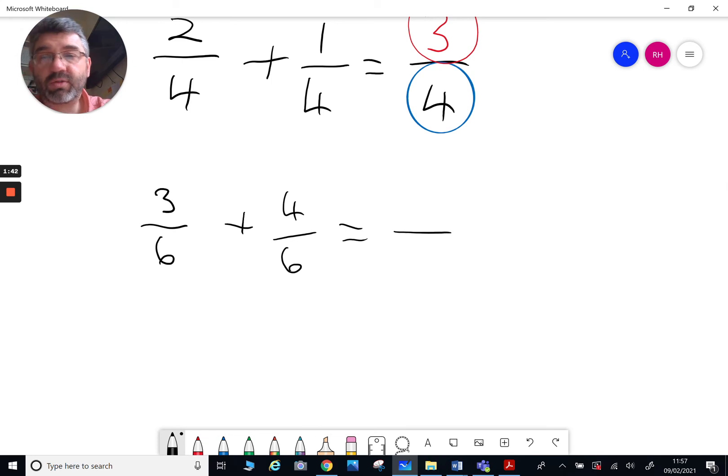First things first, remember the denominator, the number on the bottom, the six, does not change. So we can just write that down. So we look at the top: we've got three, we've got four, three and four is seven. So we've got seven sixths.